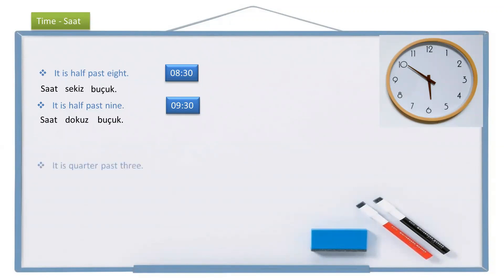And for quarters, if the sentence is it is quarter past three, remember — instead of past we say passing, geçiyor. Quarter is çeyrek. It is: saat, quarter — çeyrek, passing — geçiyor, three — üç, with the accusative suffix — üçü. It is quarter past three: saat üçü çeyrek geçiyor.